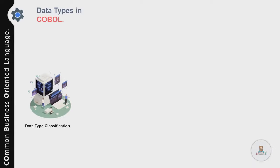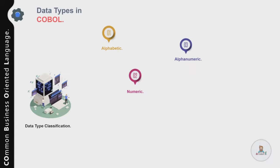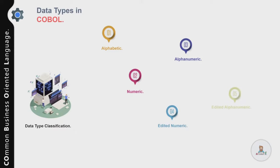In COBOL there are three primary types of data: alphabetic, which is made up of upper and lower case letters; numeric, which is made up of digits 0 to 9; and alphanumeric, which is made up of letters and digits. There are also two additional categories: edited numeric and edited alphanumeric, which are extensions of numeric and alphanumeric.